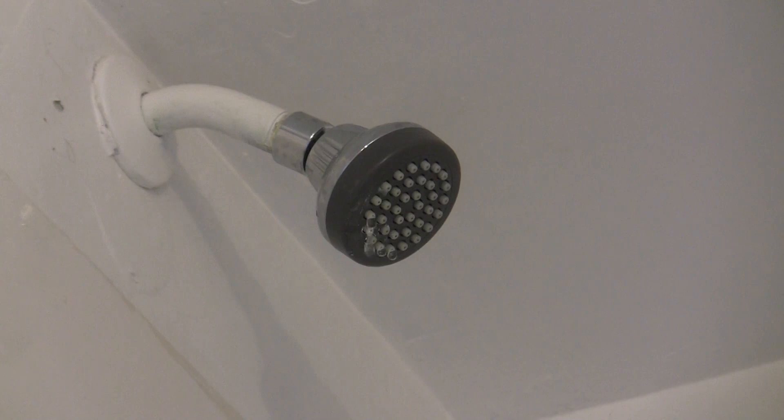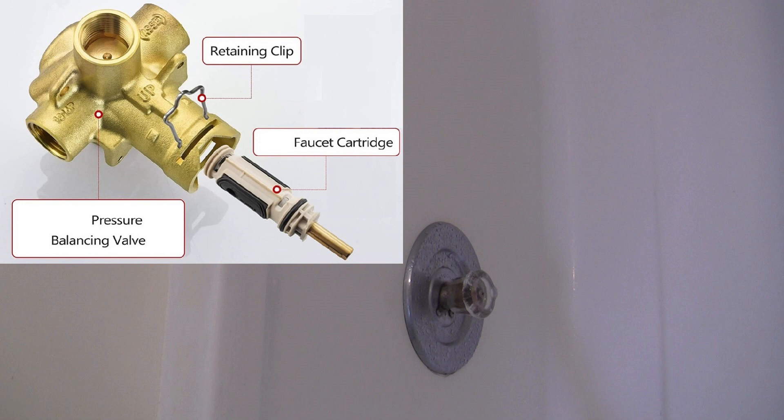Nearly all single handle shower faucets work by means of a replaceable cartridge inside the faucet body, which has seals and rings that control the flow and mix of water up to the shower head, and it is held in place by a clip.